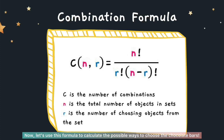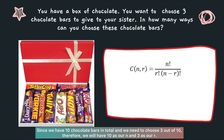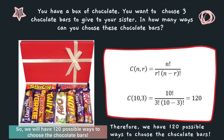Now let's use this formula to calculate the possible ways to choose the chocolate bars. Since we have 10 chocolate bars in total and we need to choose 3 out of 10, we have 10 as our N and 3 as our R. So we will have 120 possible ways to choose the chocolate bars.